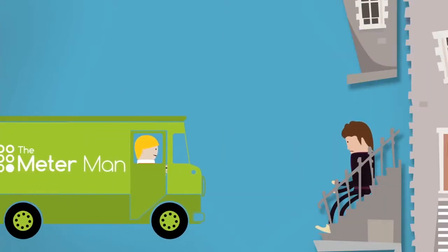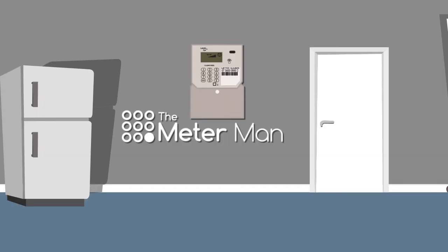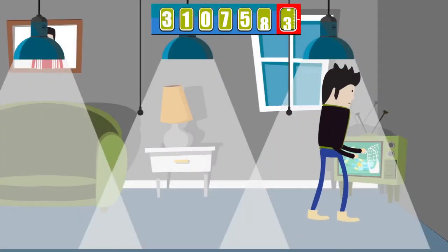What John needs is a prepaid electricity meter from the meter man. By installing a prepaid electricity meter, Liam can now manage his own electricity expenses.